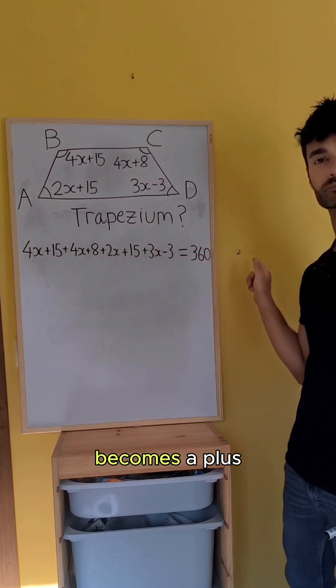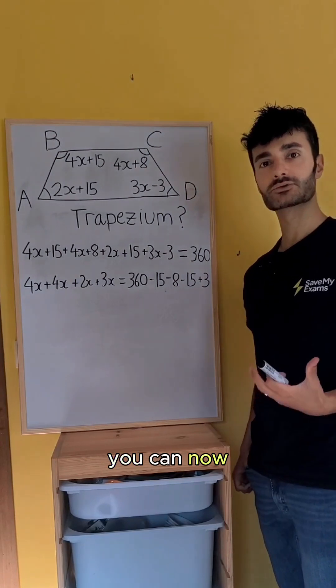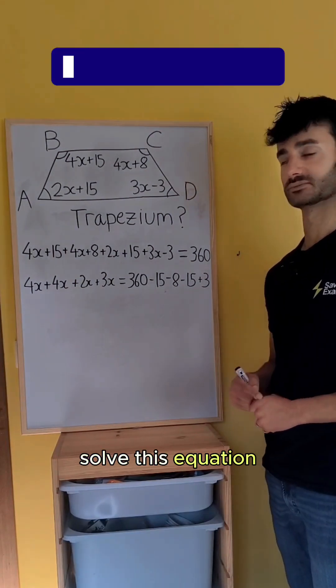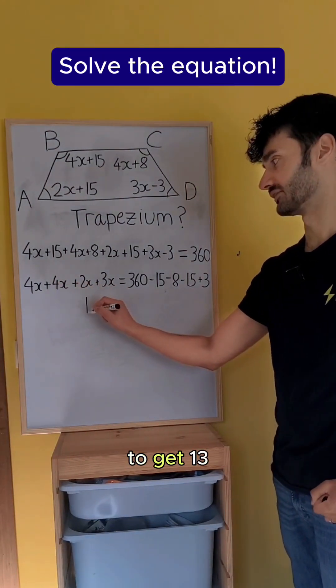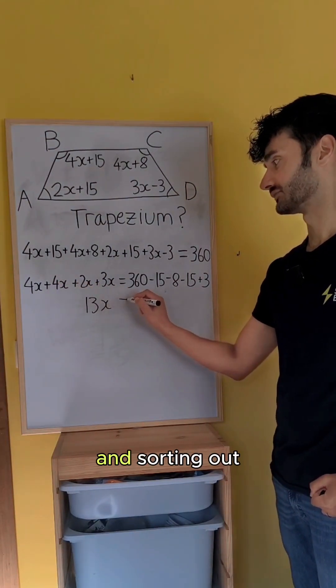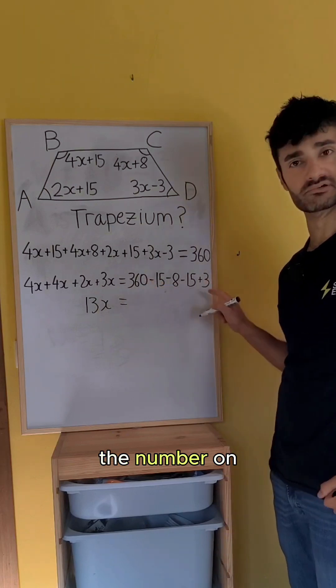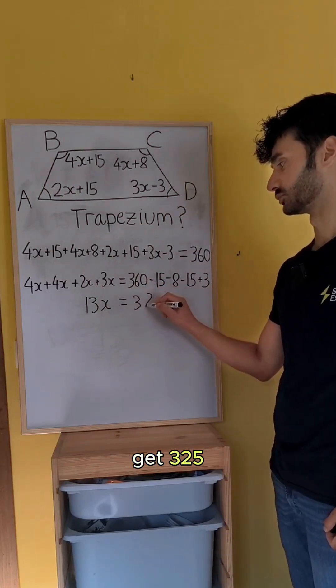The minus 3 becomes a plus 3. You can now solve this equation by collecting the x terms to get 13x, and sorting out the number on the right to get 325.